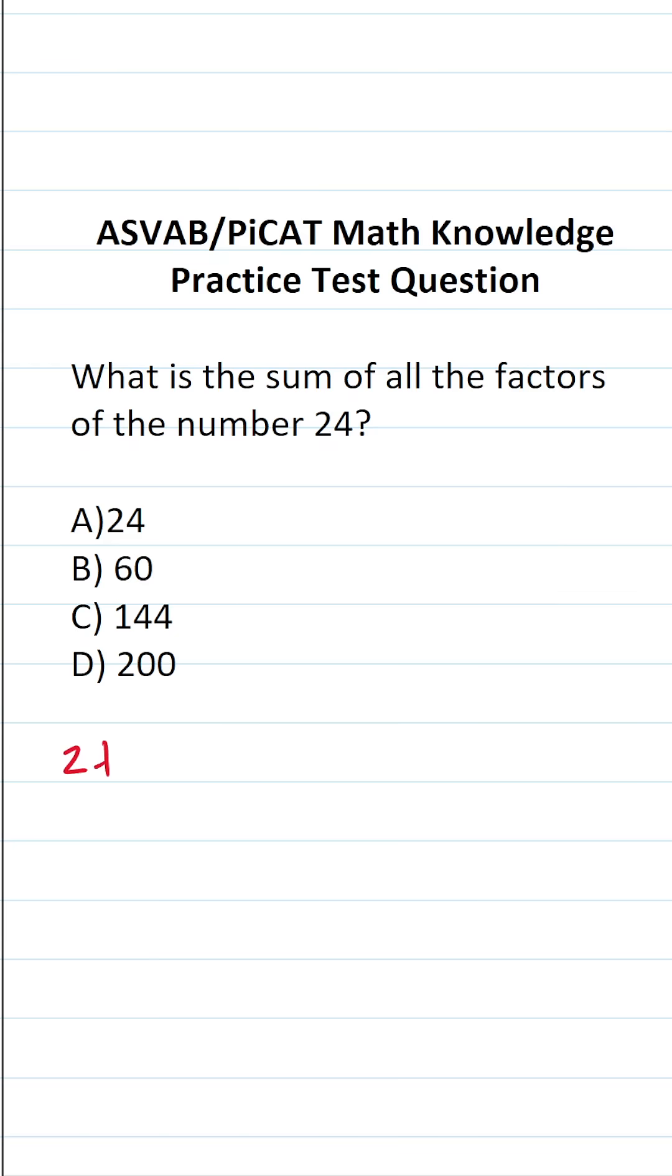So the first thing you want to do, of course, is list out all the factors of the number 24. That's going to be 1, 2, 3, 4, 6, 8, 12, and 24.